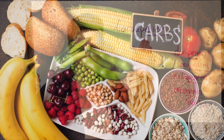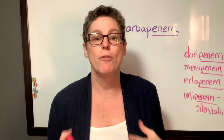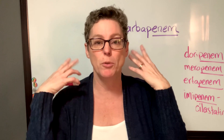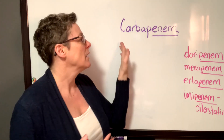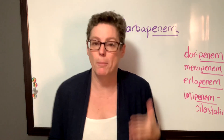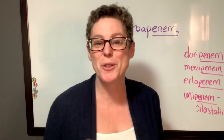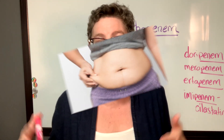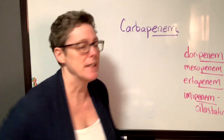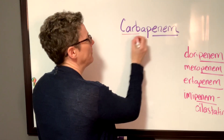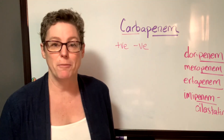Think carbs. Carbs are both good for us — we need them for cellular function, they're fuel for our brain, and they're building blocks of steroids and hormones. That represents gram positive. But carbs are also negative for our body — when we eat too much, we gain weight and become sluggish. That's how I remember that carbapenems work against both gram positive and gram negative bacteria.